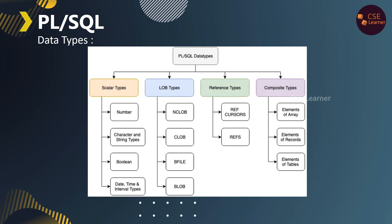There are 4 main types. Reference is a reference type. Composite is also a type where array, record, and tables are stored. This is a composite data type. Based on the data and size we need to store, we can select the appropriate data type.